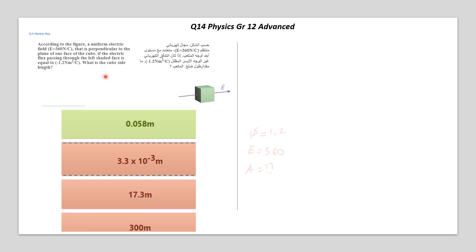To start with answering this question, we need to define the known and the unknown. Flux and electric field are given. We need to calculate the side of the cube, the length of the cube.